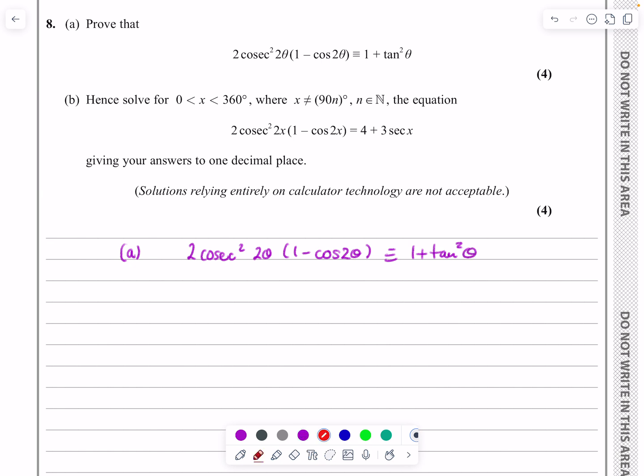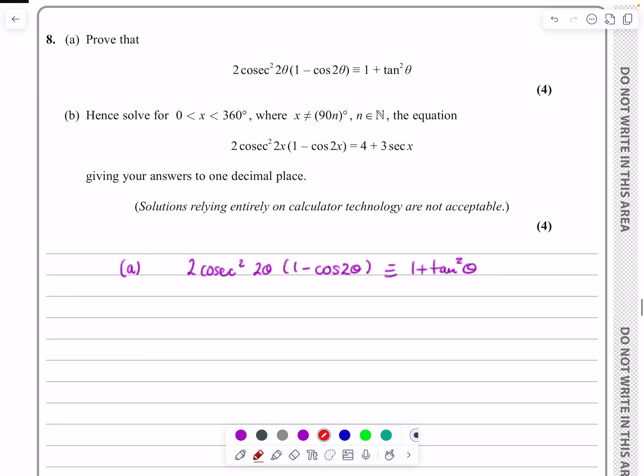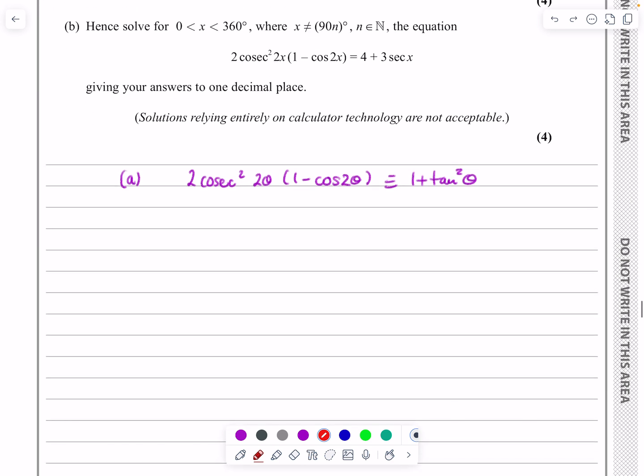So I'm going to go through the process that I went through to solve this one, just so you don't think that we always get it exactly right straight away. I would do this in an exam as well. So I'll do this bit in red. What I actually did to start with was, let's call cosec as 1 over sine. So I'm going to call this 2 over sine squared 2θ times 1 minus cos 2θ.